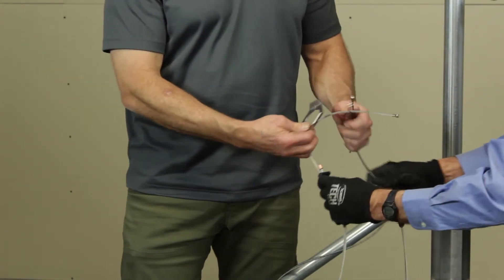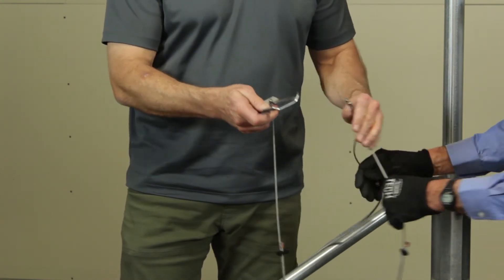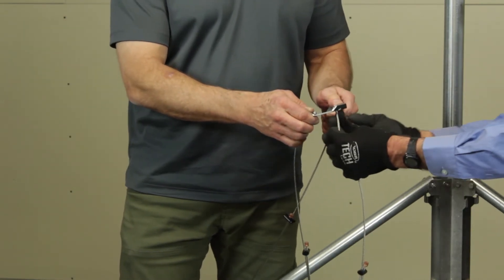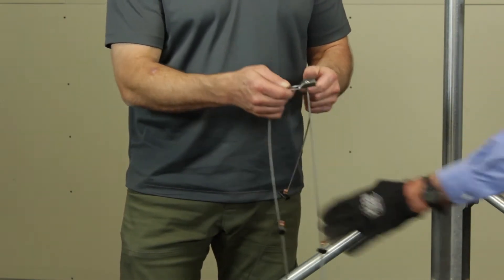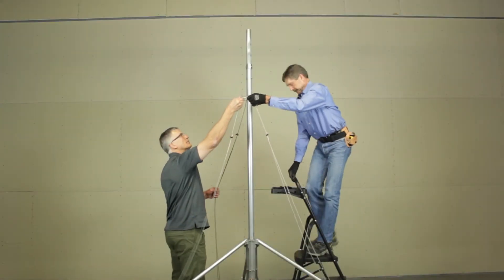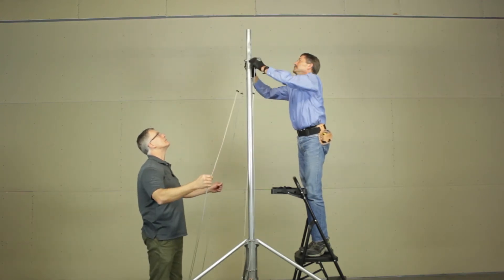Insert the top of each guy wire into a recess in the guy ring. Slide the guy ring over the top of the mast extension and lower it until it rests on the guy ring collars.